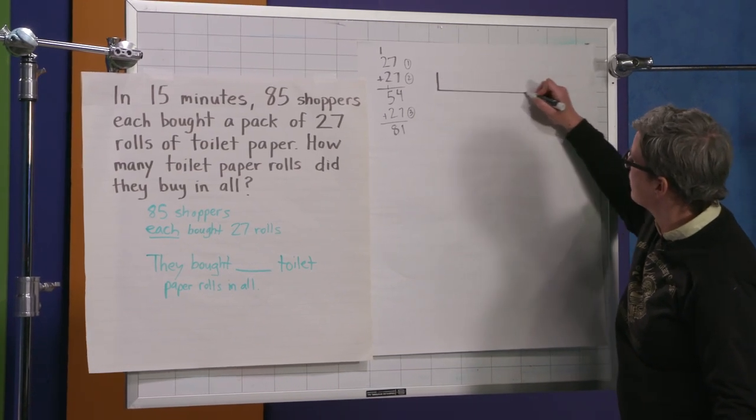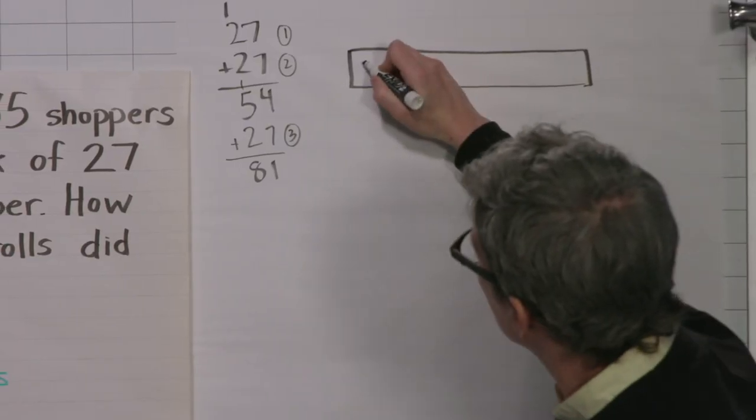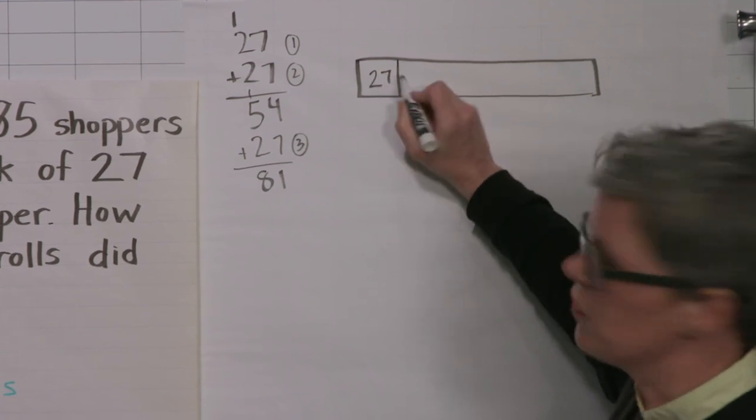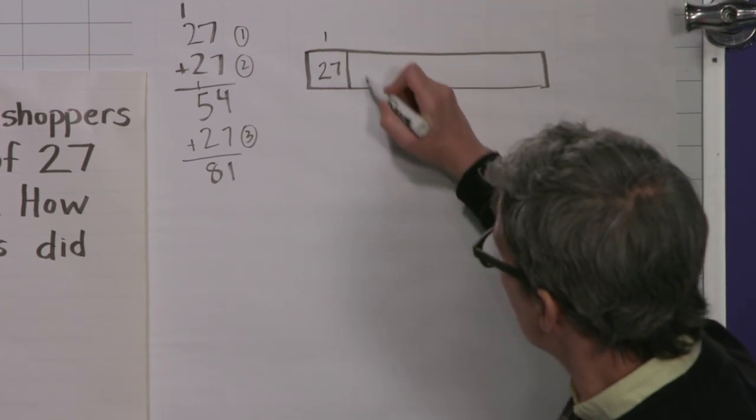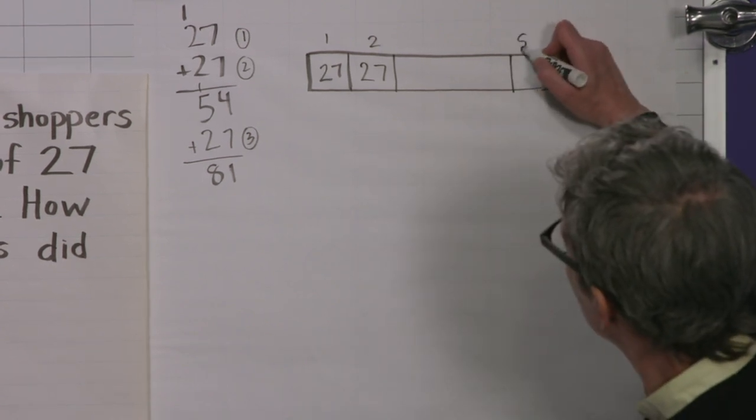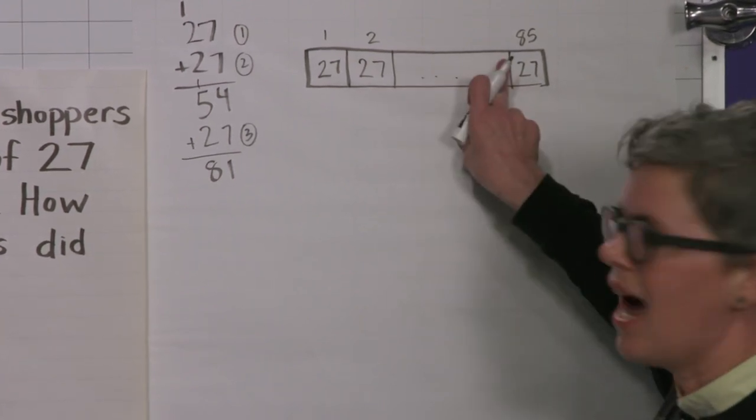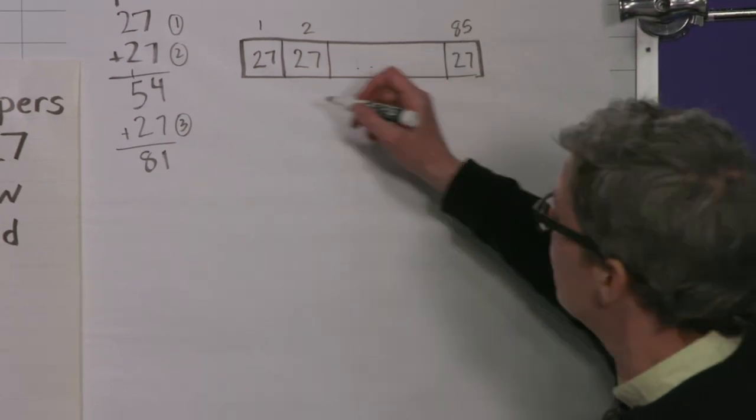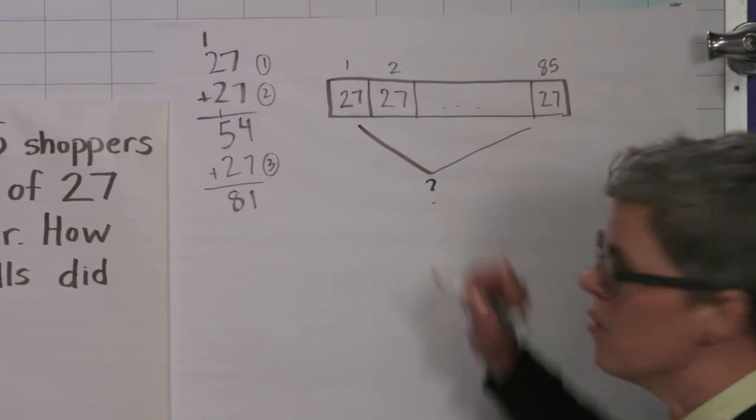I know that most of you are really familiar with bar models. So let's model this problem. So we know that the packs of toilet paper have 27 rolls in each pack. There's the first shopper. Here's the second shopper. I know at the end, there's going to be 85 shoppers. So I'm going to use this ellipsis in the middle. That means that there's a lot in between. In fact, the third shopper all the way to the 84th shopper, right? So 85 groups of 27, what we don't know is the total.